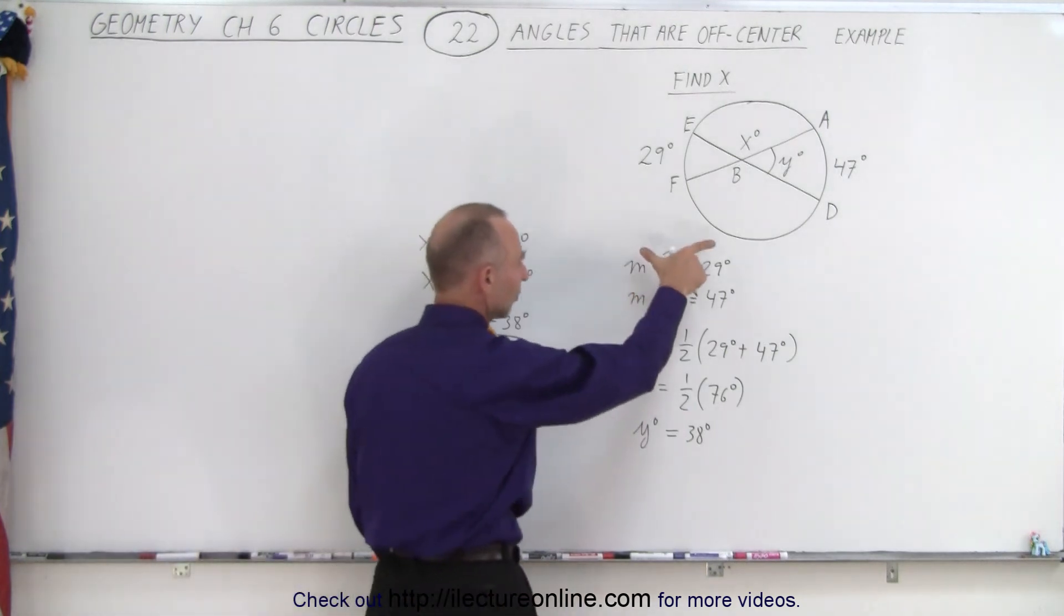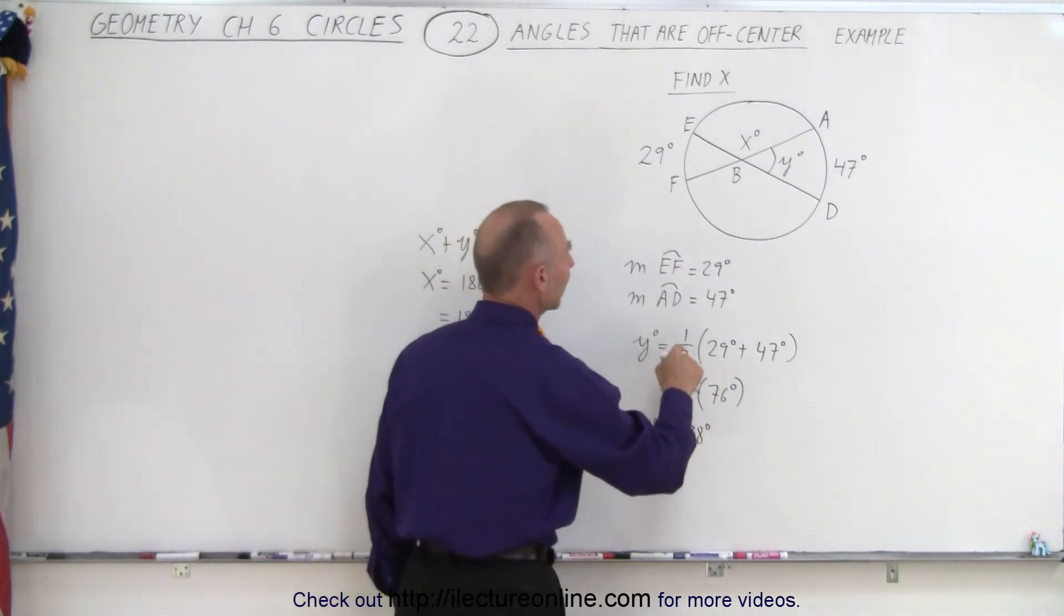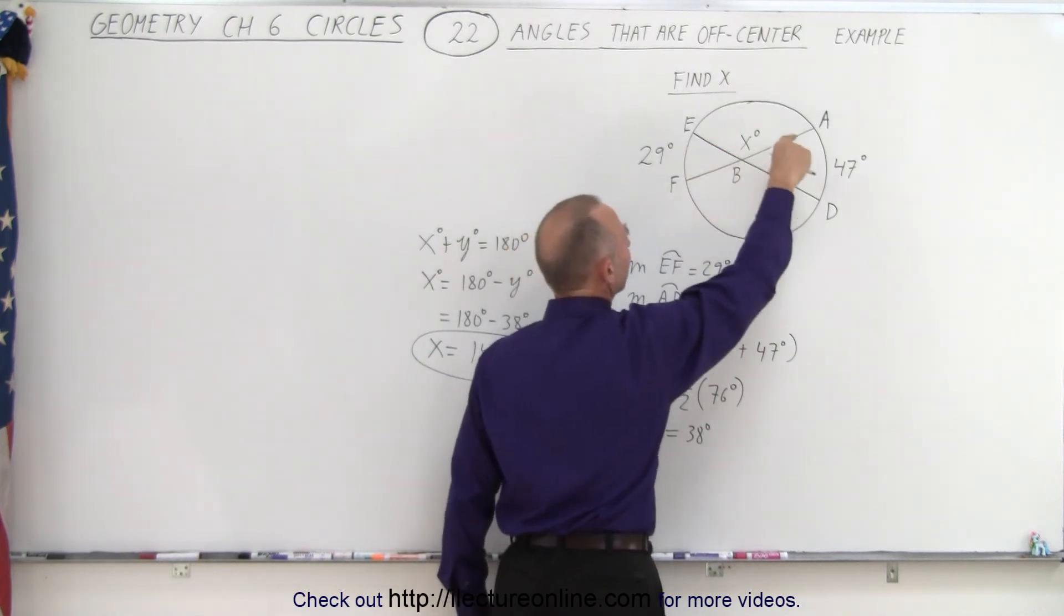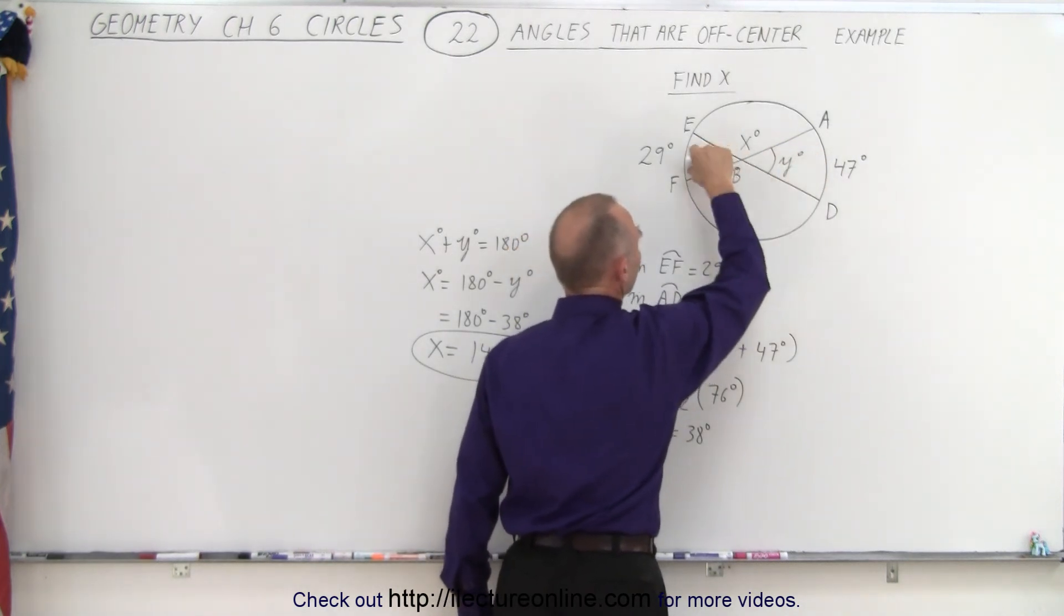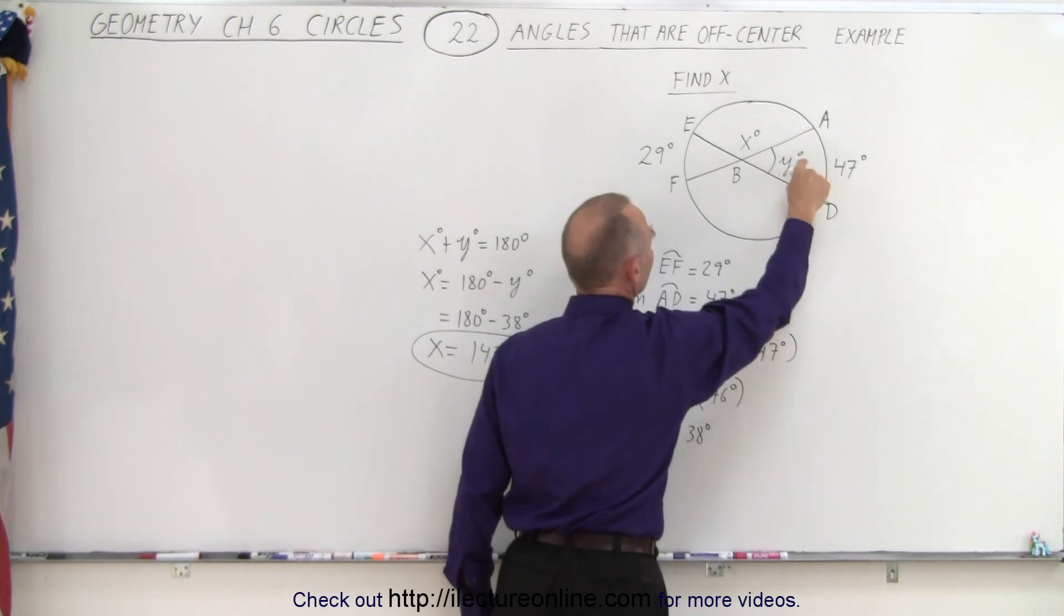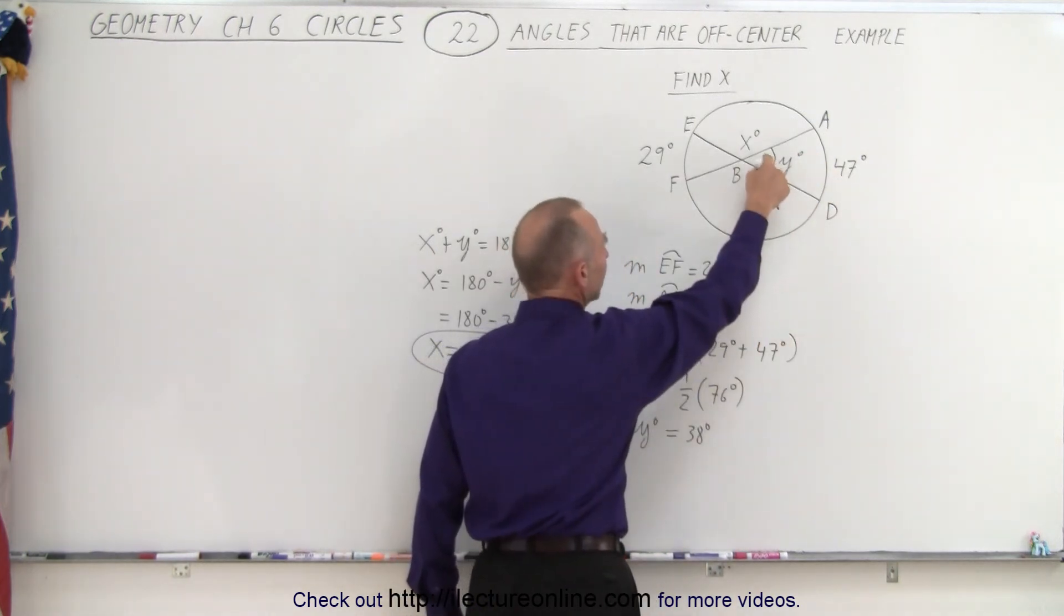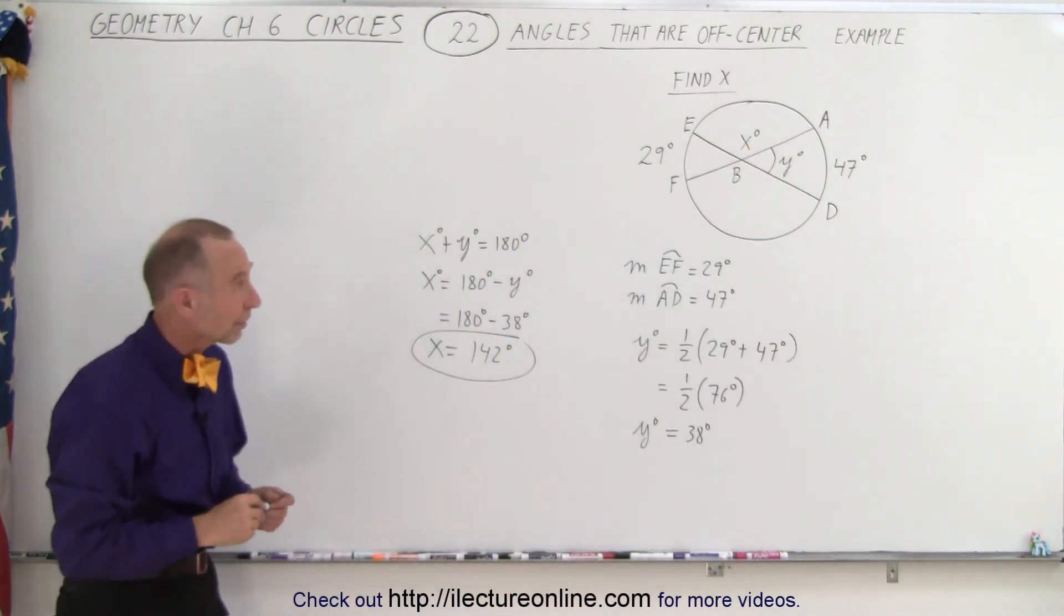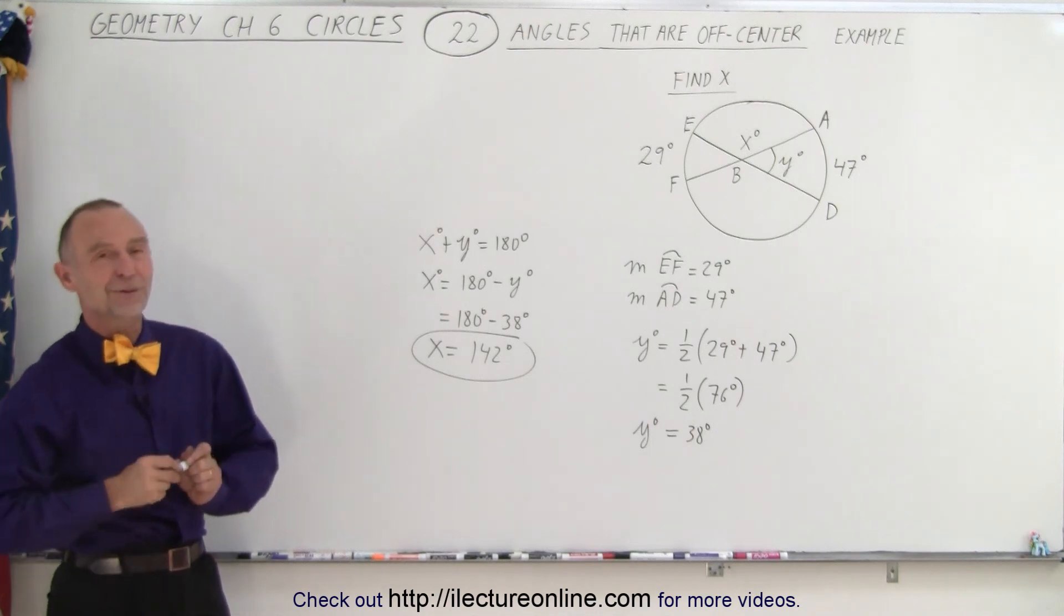So again, we use this formula where we say that the angle here is equal to half the sum of the intersected arcs. We sum them up, take half that value, which will be equal to the angle right here. Then we know that these two angles add up to 180 degrees to find the value of x, and that is how it's done.